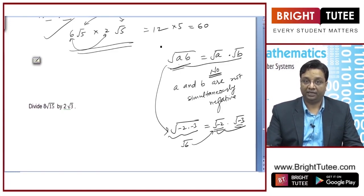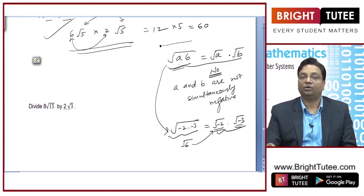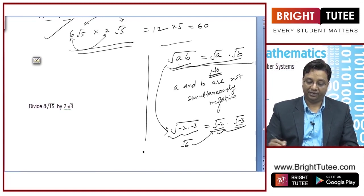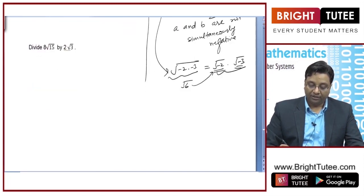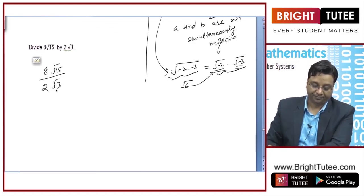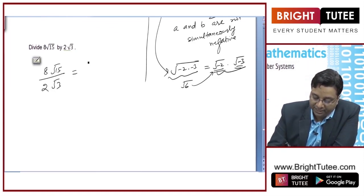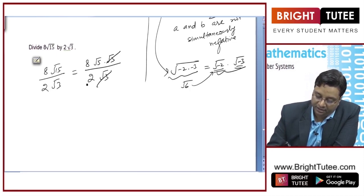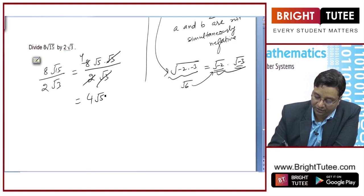You always read the statements before applying these kinds of results. It will be written in your class that A and B are positive or non-negative, then this rule applies — so keep this in mind. Now, dividing 8√15 by 2√3: √15 can be written as √5 × √3. Divided by 2√3, we can cancel √3, which gives 4. So the answer is 4√5.